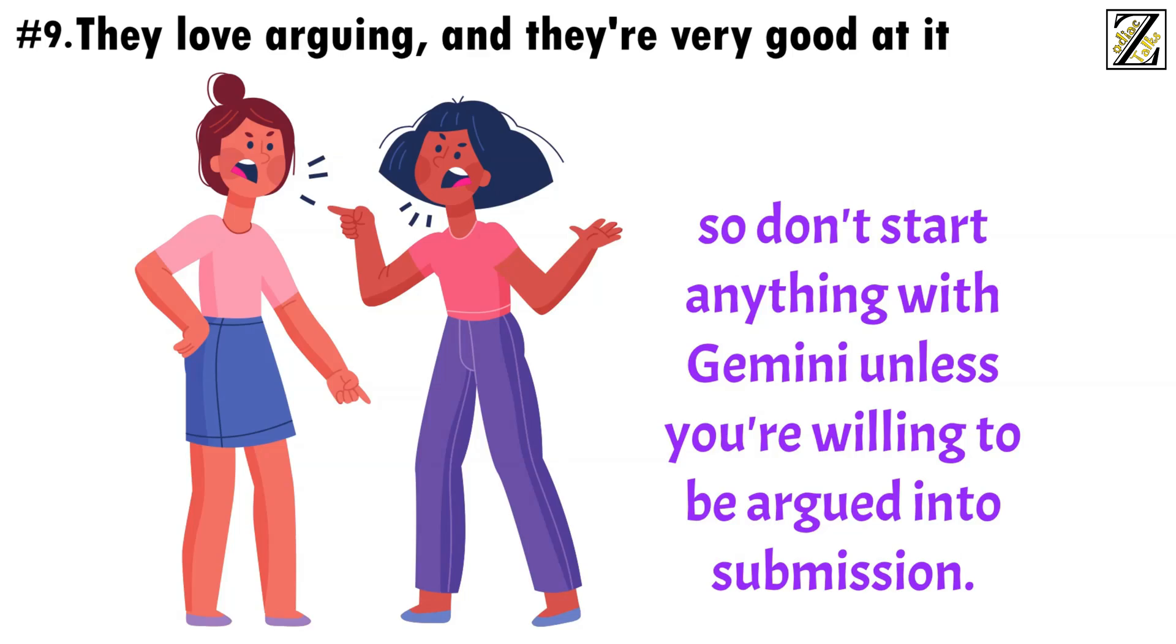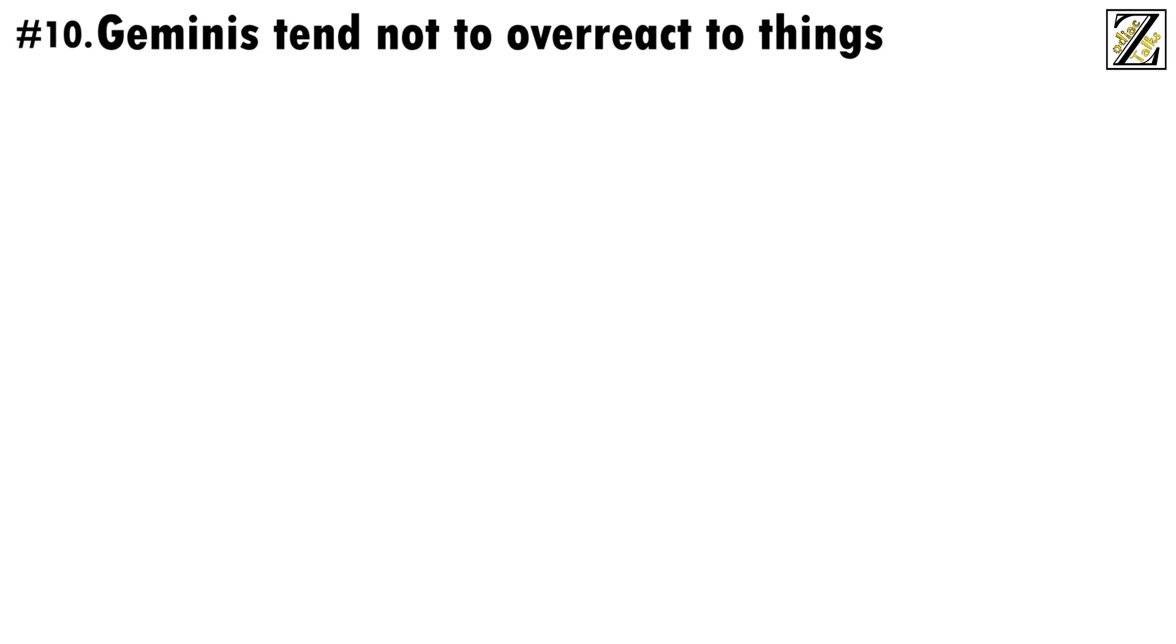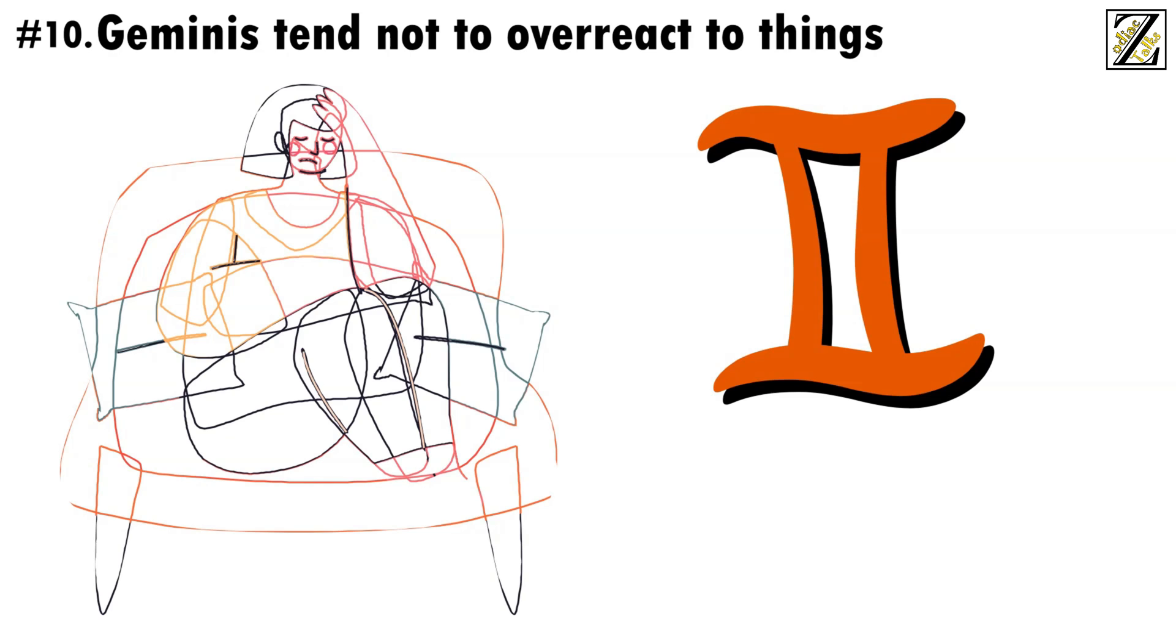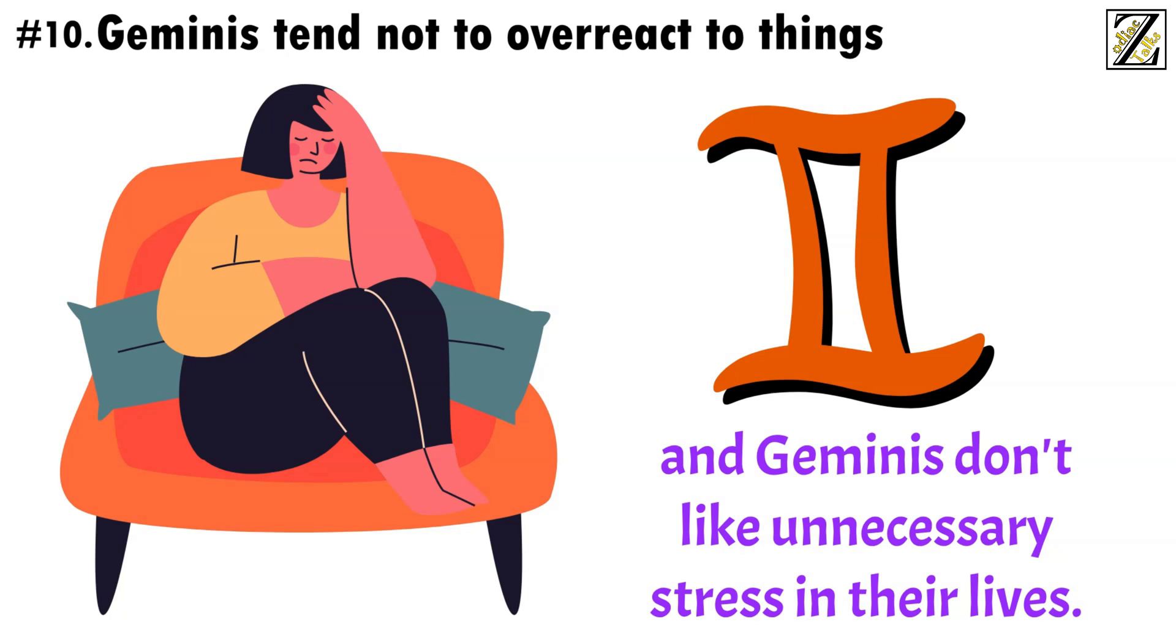Number 10, Geminis tend not to overreact to things. Gemini is one of the most laid-back zodiac signs, unwilling to take things too seriously, or start drama at the drop of a hat. Sure, they like arguing, but they do it because it's fun, not because they feel the need to make every situation worse. People who just create drama for drama's sake, or who like to blow things out of proportion, stress Gemini, and Geminis don't like unnecessary stress in their lives.